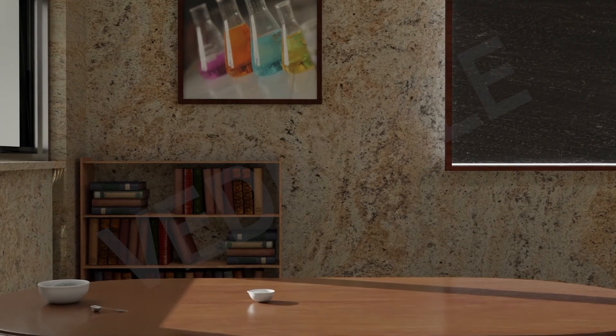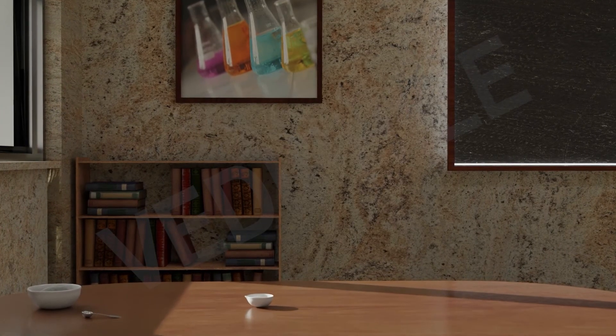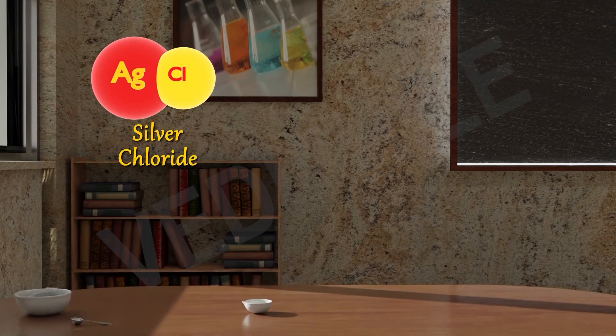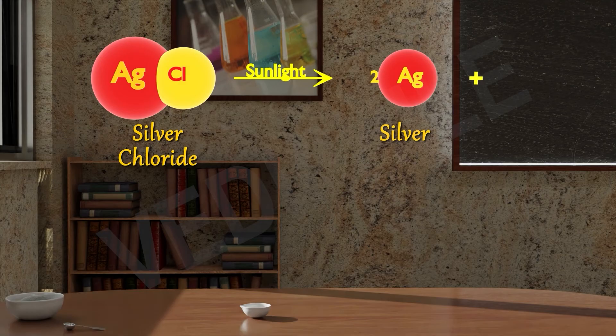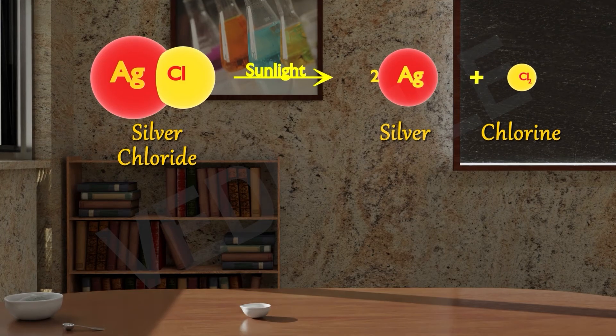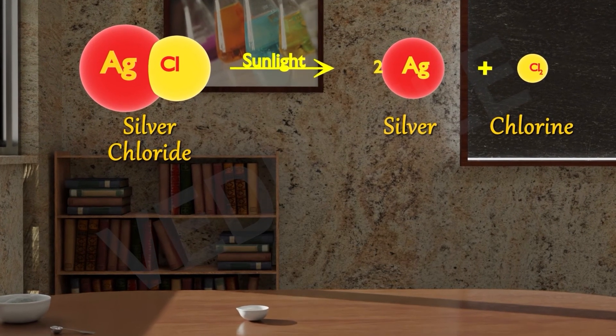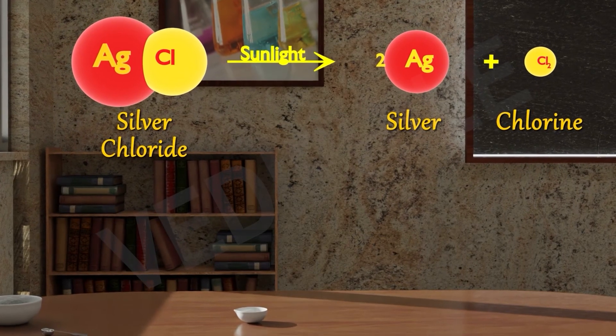So, if we write this reaction, we will write it like AgCl with sunlight gives us silver and chlorine, means 2Ag plus Cl2. So, we get chlorine gas in this reaction.